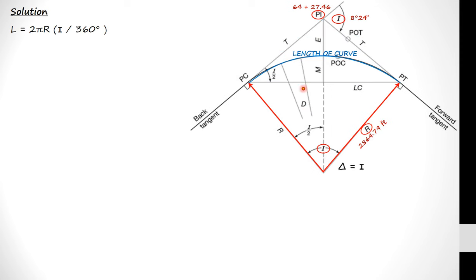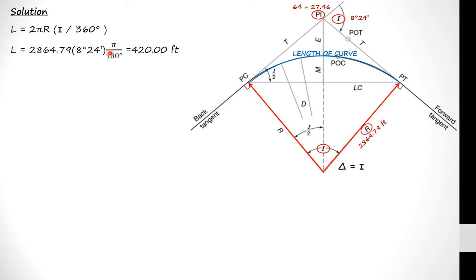First, we find the length of curve using the radius and intersection angle of 8 degrees 24 minutes. Plugging into the equation — radius times the intersection angle times π over 180 — gives us a length of curve of 420 feet. We use π over 180 because the 2 cancels with 360 to make 180. When putting this into your calculator, make sure it is correctly handling degrees and minutes.